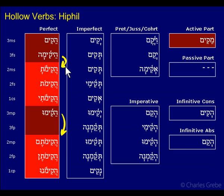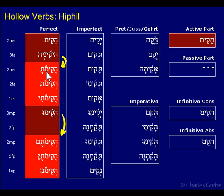In the Nifal we had qamets reducing to sheva — that was the pretonic reduction of the prefix vowel — qamets to sheva; we had holem-vav to shuruq, the theme vowel reduction; and we had the addition of the helping vowel. In the case of Hiphil, we just have two of those. The theme vowel stays — hirik-yud stays — but we have the prefix vowel tzere reducing to hataf-patah, and we have the addition of the same helping vowel we did in the Nifal, the holem.